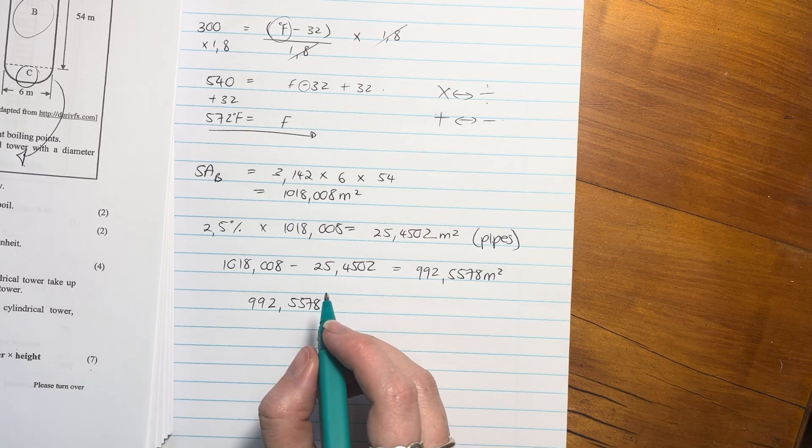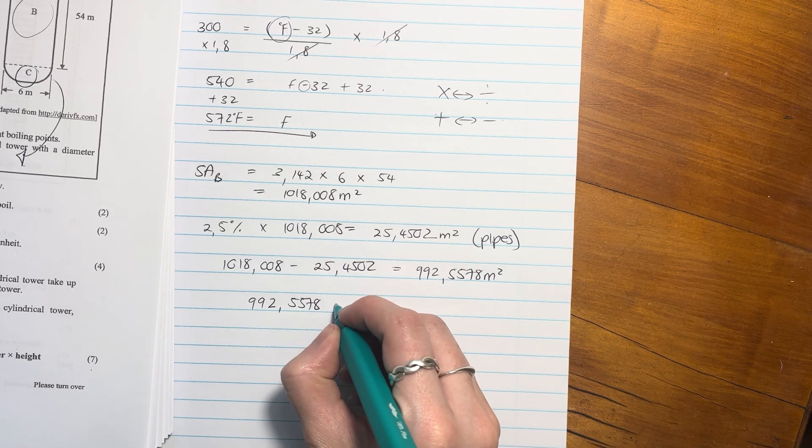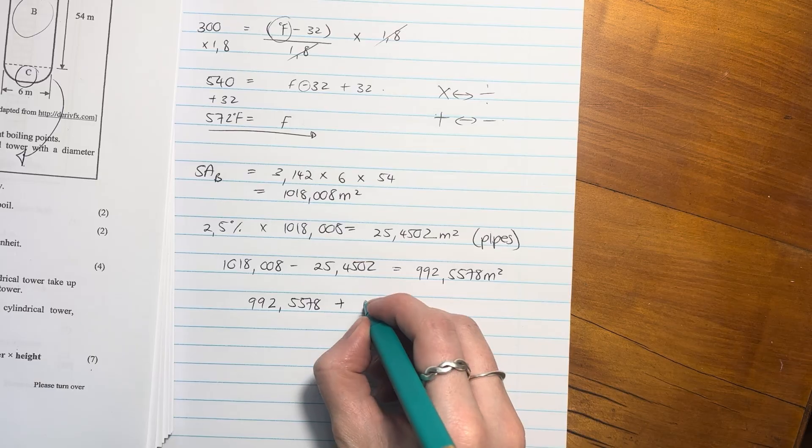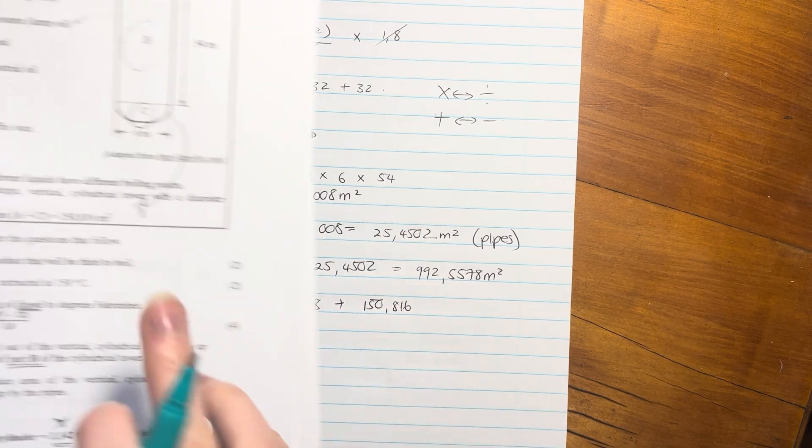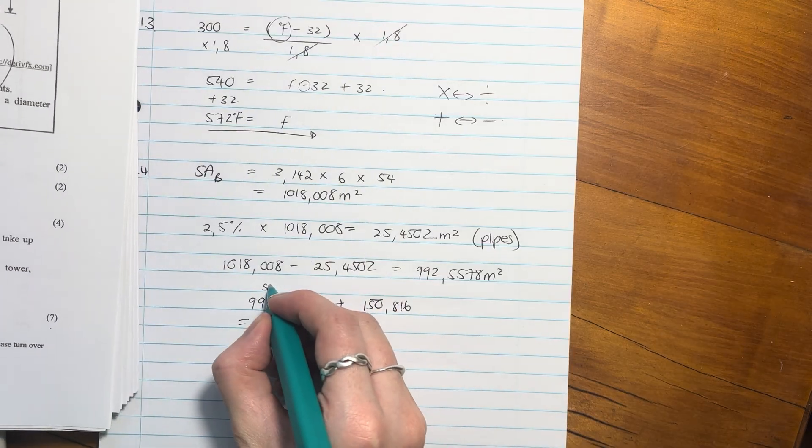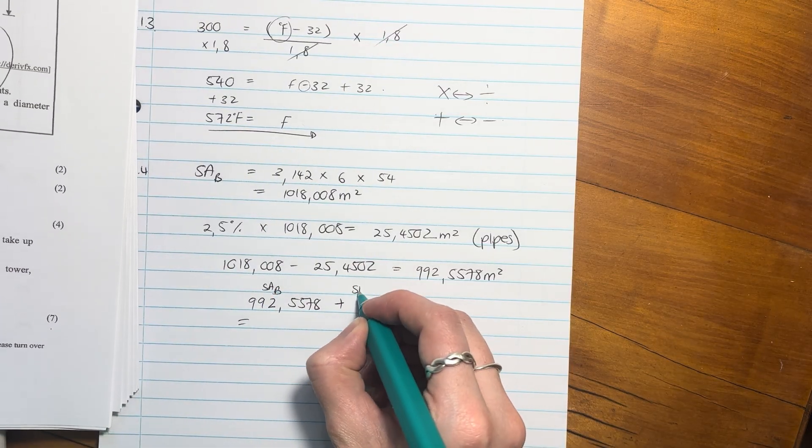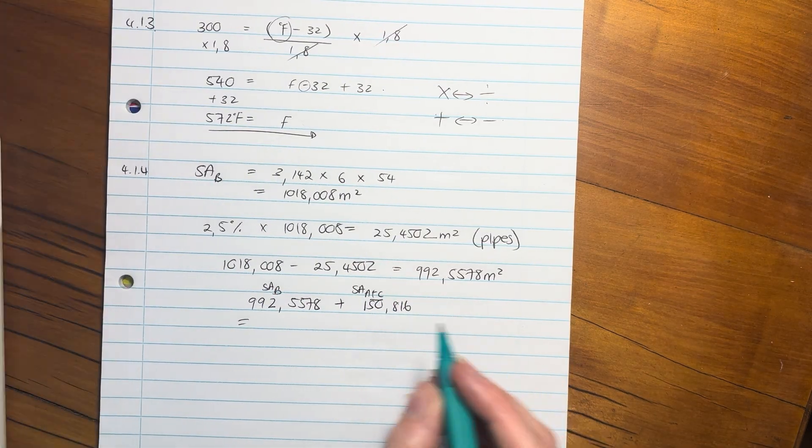And we're going to add in 150,816. Make sure you put that in correctly. So that's basically the surface area of B, and that's the surface area of A and C, just so that you can follow.